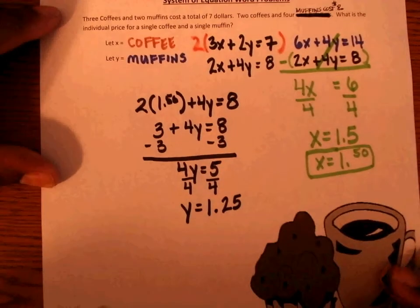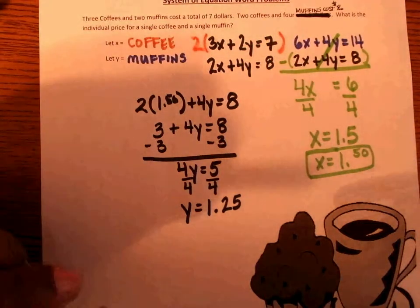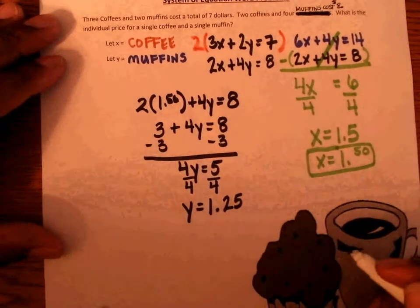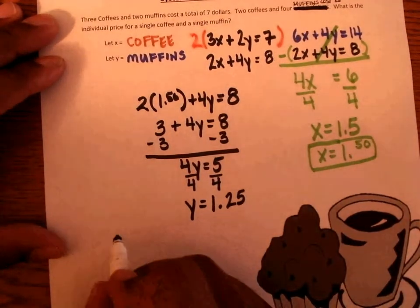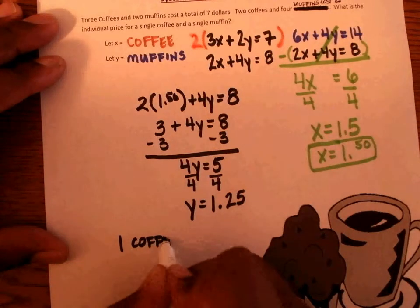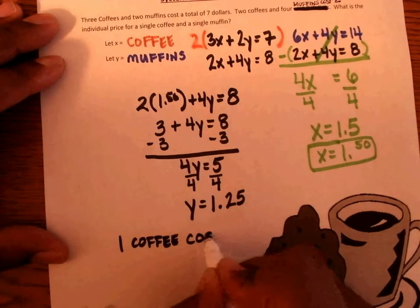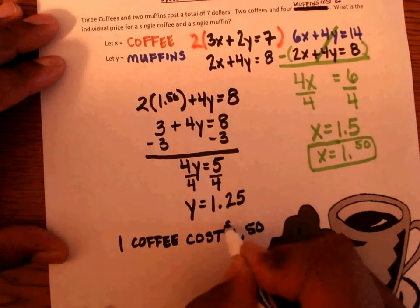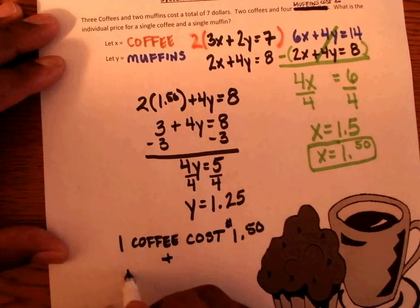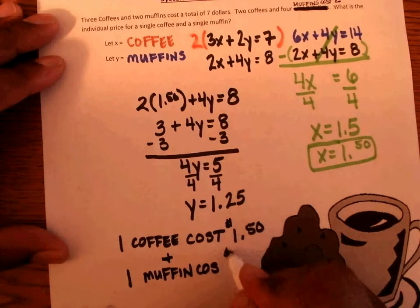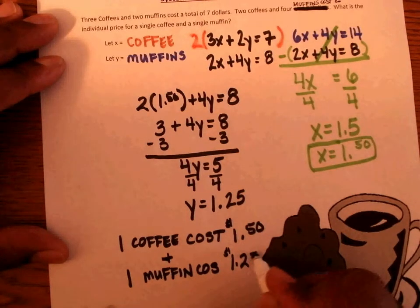So the question asks, what is the individual price for a single coffee and a single muffin? Our answer in sentence form is: one coffee costs a dollar and fifty cents, and one muffin costs a dollar and twenty-five cents.